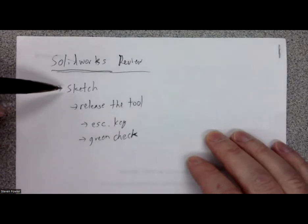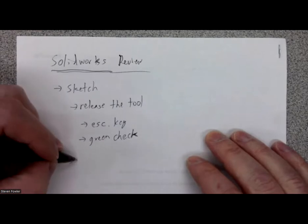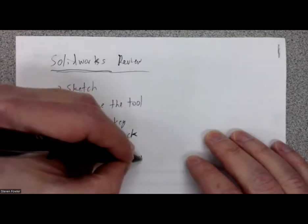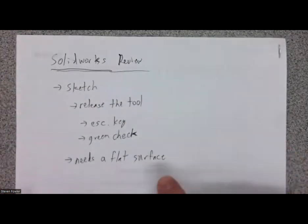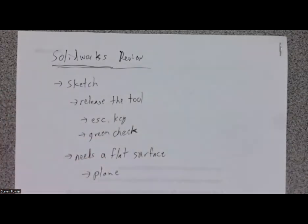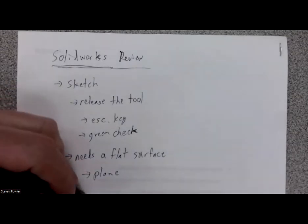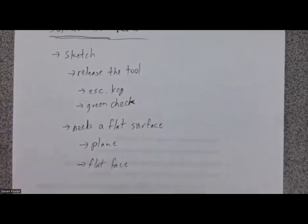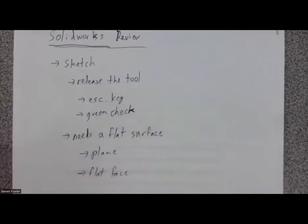Right now our focus is just on two-dimensional sketches. A two-dimensional sketch needs a flat surface — it has to live on a flat two-dimensional surface. That can be a plane: front, top, and right planes, which are already built into SOLIDWORKS. Later we'll talk about adding more planes, but it could also just be a flat face within our model.